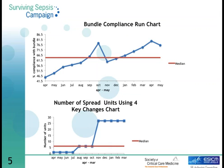I've made a couple of sample run charts for us to look at — one for bundle compliance and one for the number of spread units using four key changes. On the spread units chart, we started with one unit using all four changes for the first four months, then brought on five more for a total of six. This is a cumulative measure — then we brought on 25 more units, moving up in increments, and now 27 units are using all four key changes.